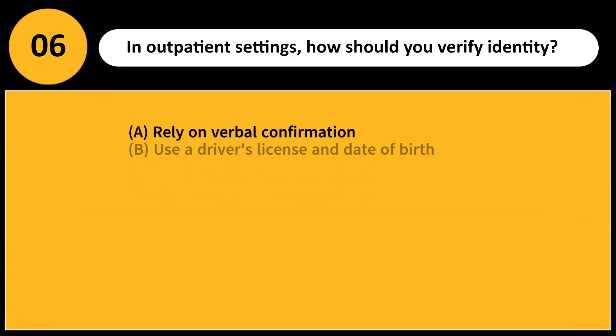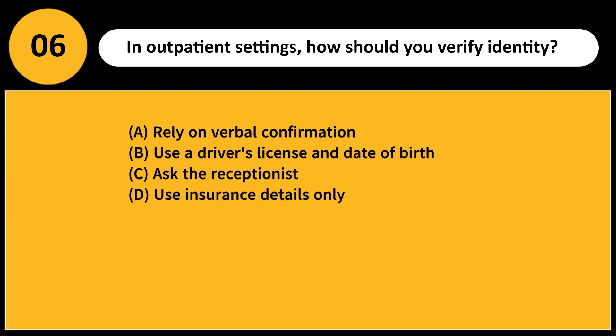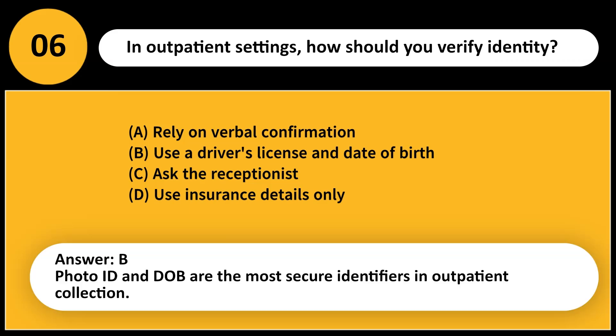In outpatient settings, how should you verify identity? A. Rely on verbal confirmation. B. Use a driver's license and date of birth. C. Ask the receptionist. D. Use insurance details only. Answer: B. Photo ID and DOB are the most secure identifiers in outpatient collection.